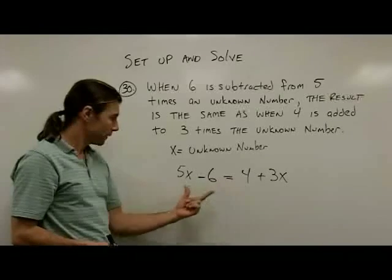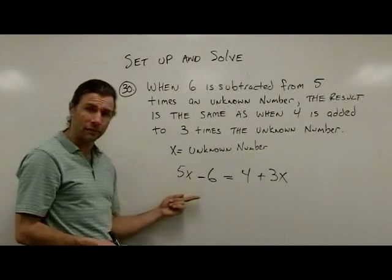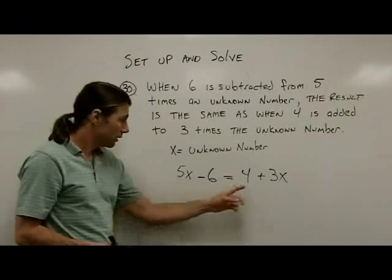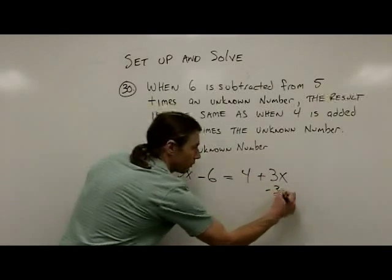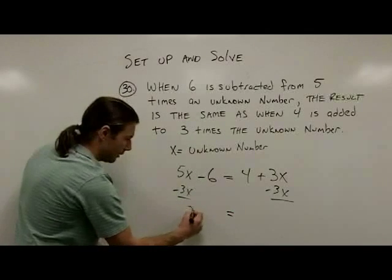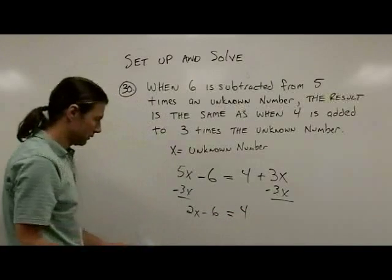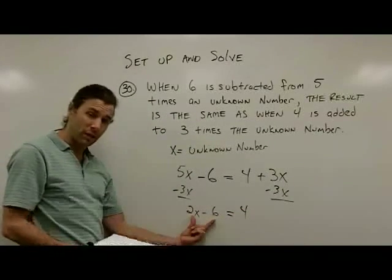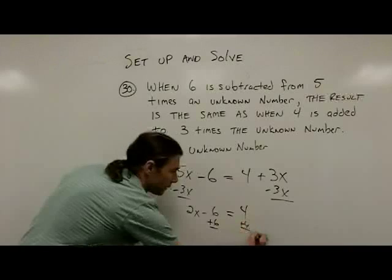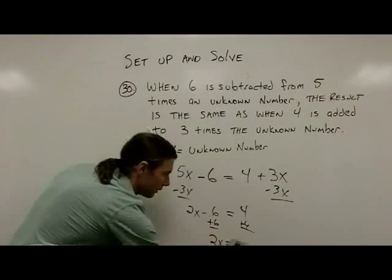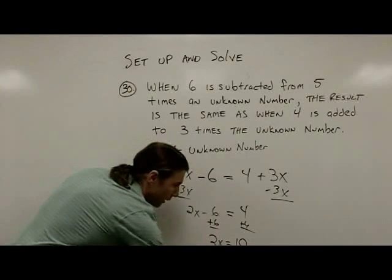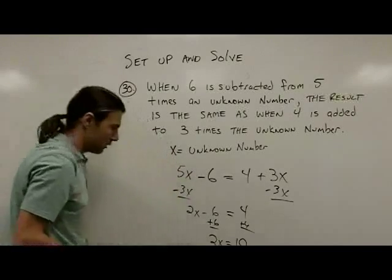Now I solve the equation. Step 1: can I simplify either side? No. Step 2: I have variable terms on both sides. I subtract 3x from both sides, giving me 2x minus 6 equals 4. Step 3: undo the subtraction by adding 6 to both sides. Then I divide both sides by 2, and x equals 5.